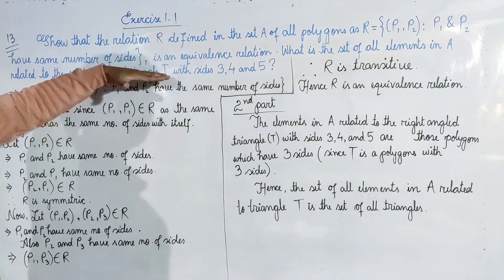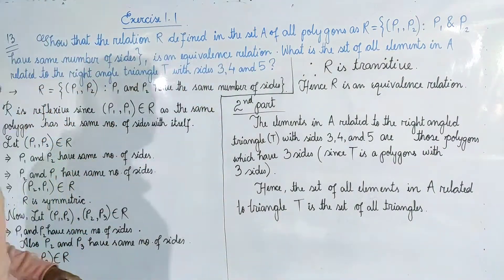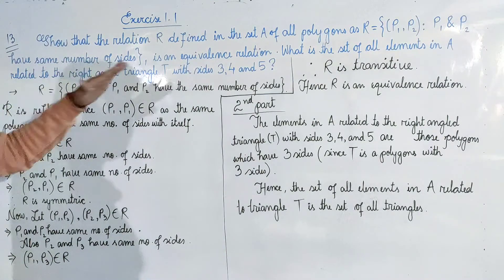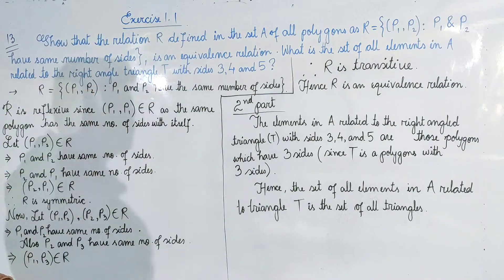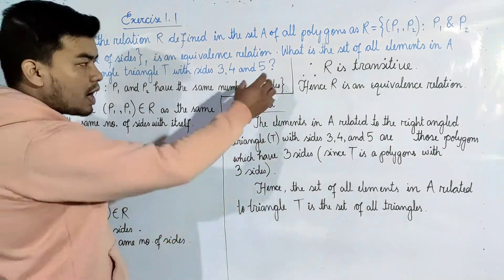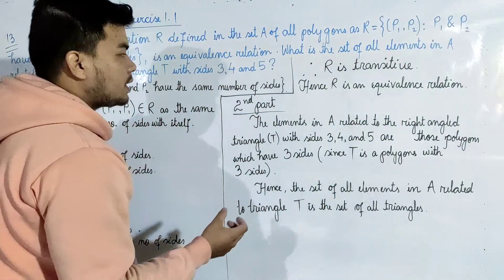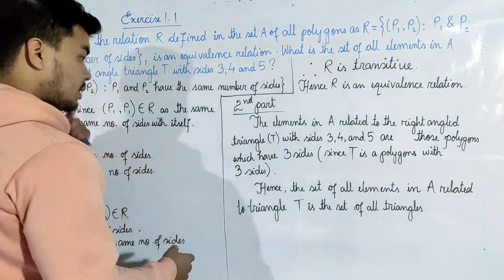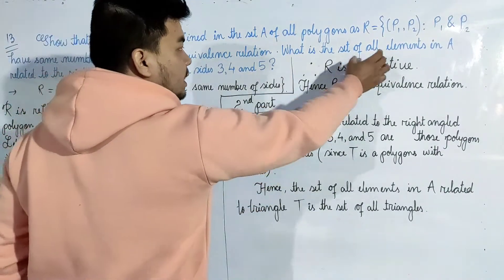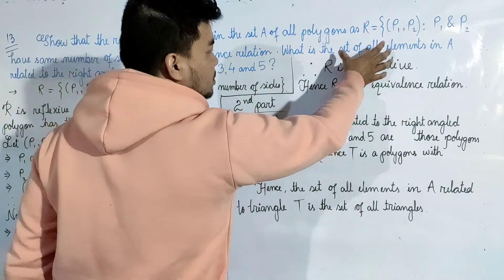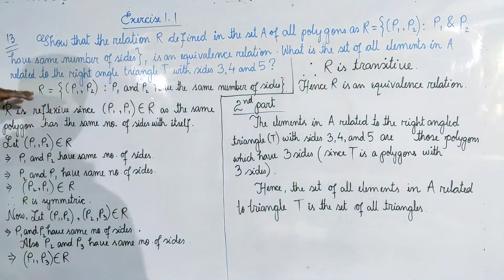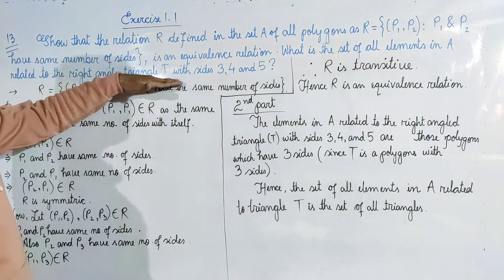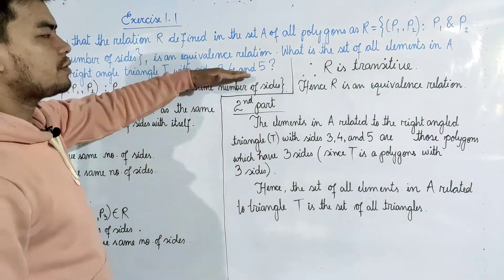We need to check whether R is an equivalence relation. Also, we need to find the set of all elements in A related to the right-angle triangle T with sides 3, 4, 5.